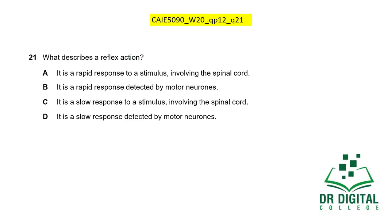In this question, what describes a reflex action? Option A: it is a rapid response to a stimulus involving the spinal cord — yes, this is correct; for any rapid response where the spinal cord is involved, it can be a reflex action (sometimes the brain is involved instead). Option B: it is a rapid response detected by motor neurons — no, response is not detected by motor neurons, so this is wrong. Option C: it is a slow response — no, reflex actions are rapid, not slow. The answer is A.